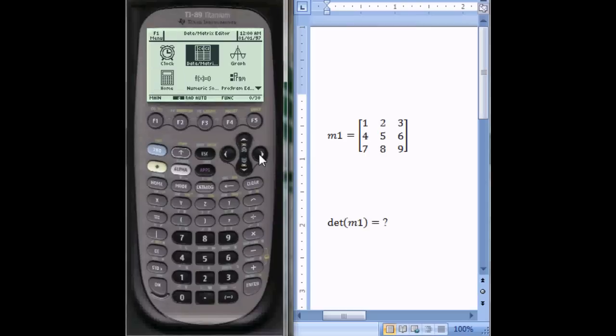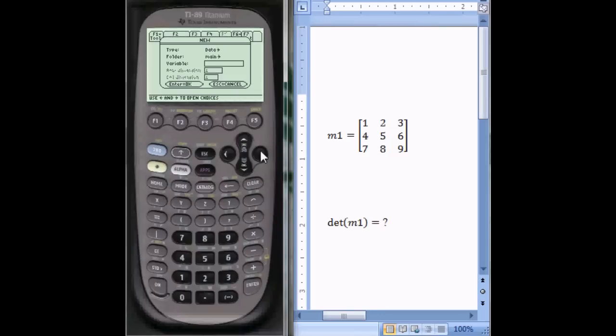Scroll over to data matrix and press enter. Scroll down to new, press enter. Tell the calculator that it's matrix type, that's type 2.